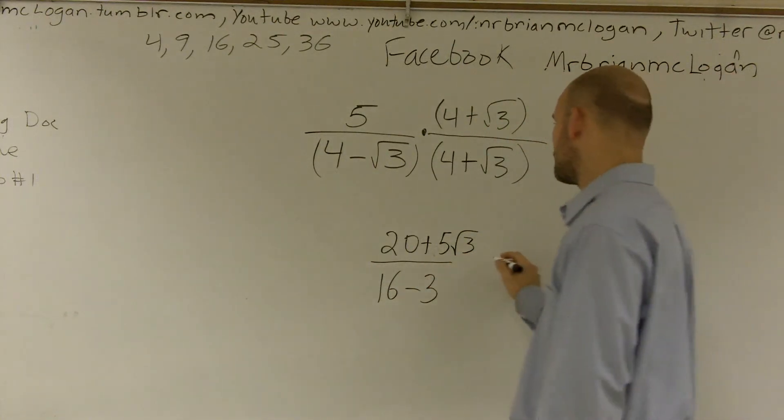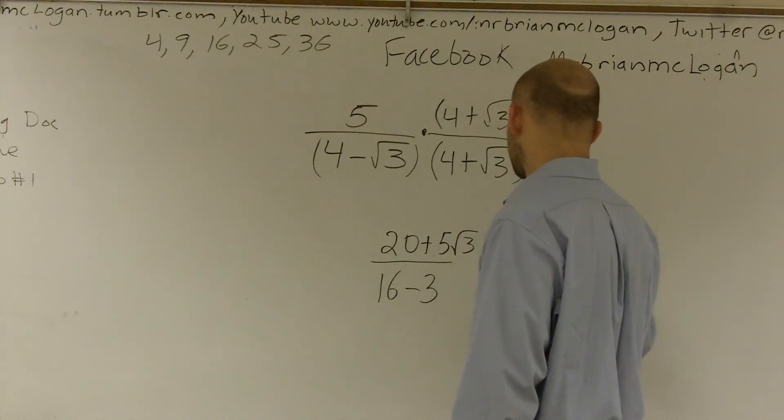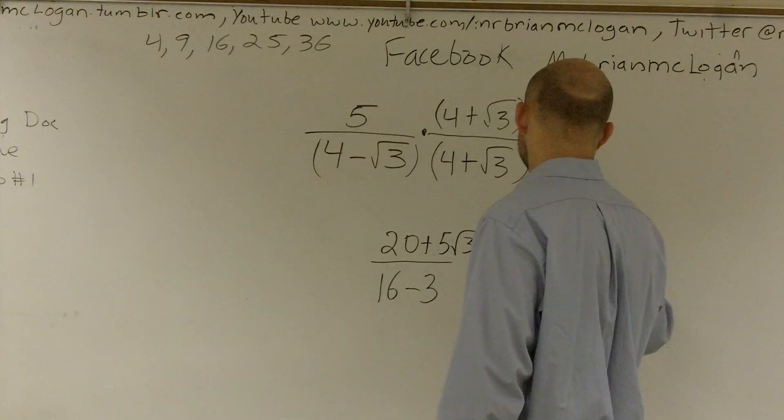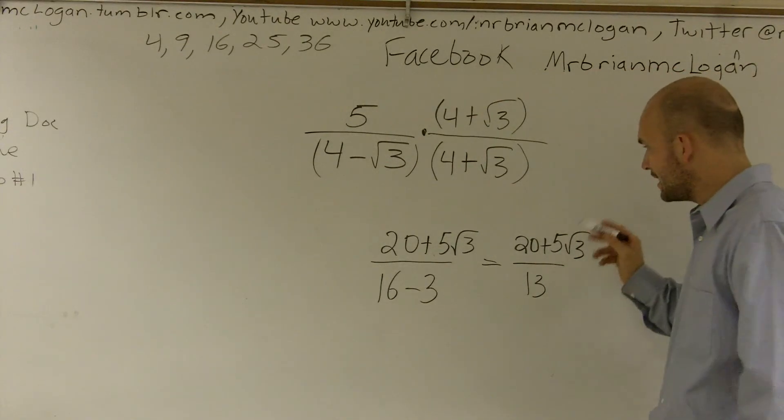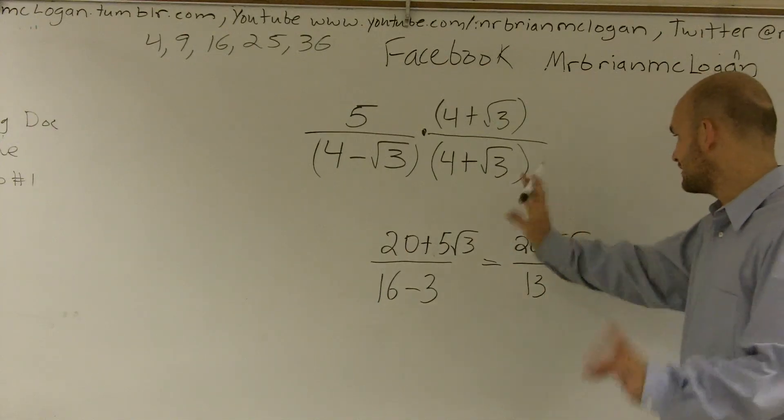Now here I can subtract this down—this becomes 13 equals 20 plus 5 radical 3. And since 13 is a prime number, I can't factor anything out from there.